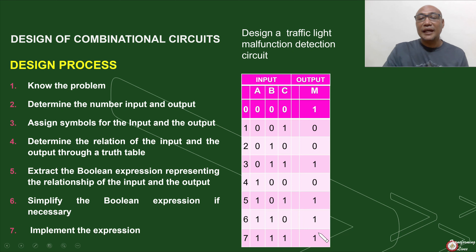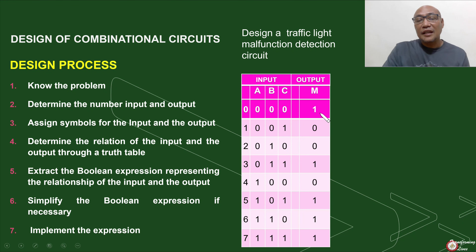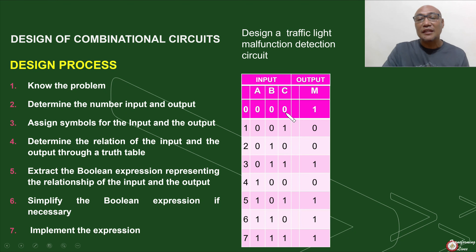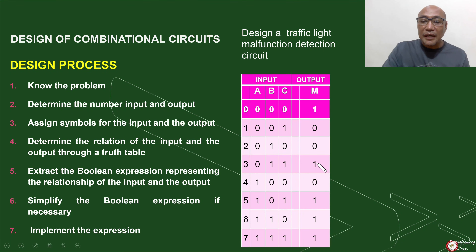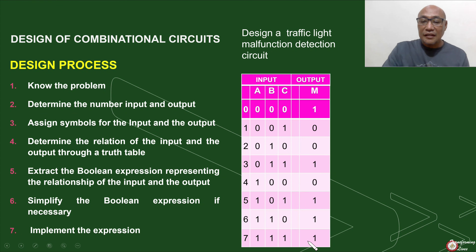With that, we can now extract the Boolean expression. From our truth table, we can extract the expression directly. All those combinations that are equivalent to 1 correspond to a minterm. For example, the combination 0,0,0 is equivalent to A'B'C'. The combination 0,1,1 — minterm 3 — is equivalent to A'BC. Number 5 is 1,0,1, so that will be AB'C. Number 6 is AB'— wait, A,B,C prime — and number 7 is equal to ABC. It will result in this equation.